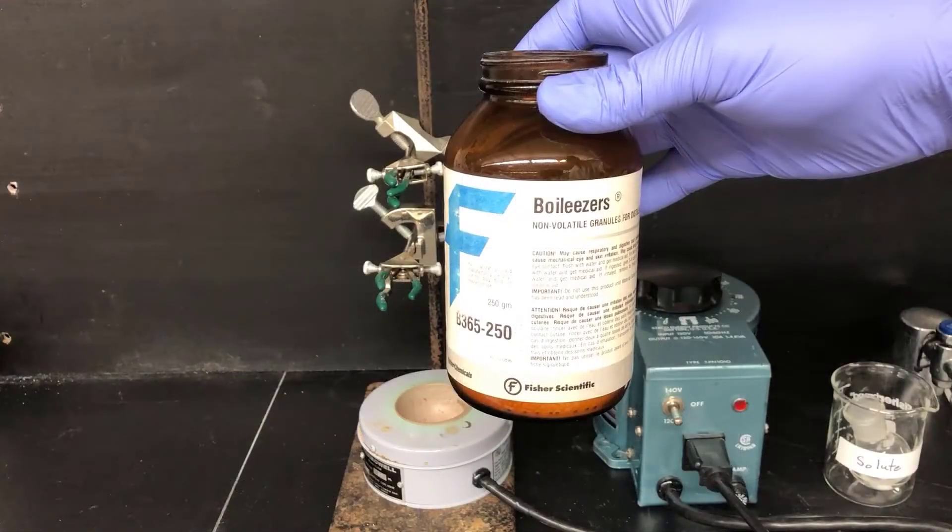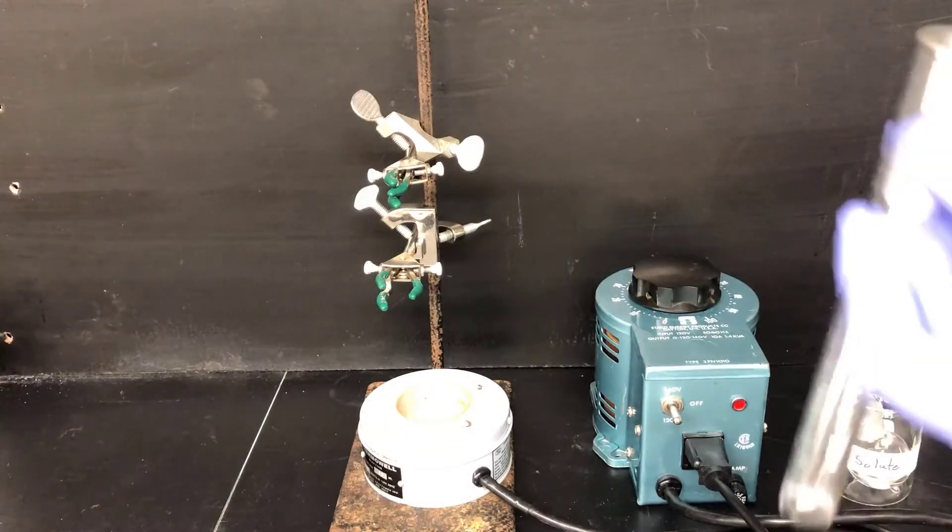Next, I'm going to acquire physical property data on my unknown solute to help me identify it. Since I have a liquid, I'll be doing boiling point analysis. But if my unknown solute was a solid, I'd be doing melting point analysis instead. Melting point analysis is familiar from previous experiments and videos. But acquiring a boiling point on a small sample of liquid is something we haven't done yet. So I'm going to demonstrate how to do that here.